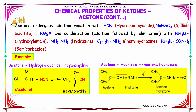Acetone undergoes addition reactions with HCN, NaHSO3, and RMgX, and condensation with NH2OH or hydrazine (NH2NH2), as well as addition reactions with phenyl hydrazine and semicarbazide. For example, when acetone reacts with hydrogen cyanide, the CN− attacks the carbonyl carbon, breaking the double bond, and hydrogen bonds to the oxygen, forming a cyanohydrin product.